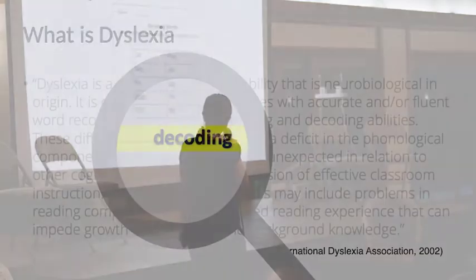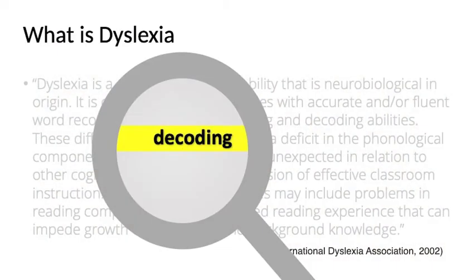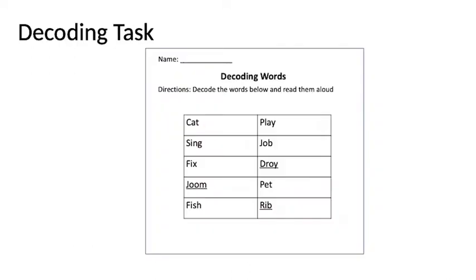Decoding is simply defined as the knowledge of how letters and sounds relate to and connect with one another. If you see the word 'cat' — C-A-T — and you don't know how to say it, you're going to pretend you're a preschooler seeing these words for the first time. Either it's a sight word you've learned in school, or you try to sound it out: C-A-T. That's the decoding process — you sound it out and pronounce it correctly.